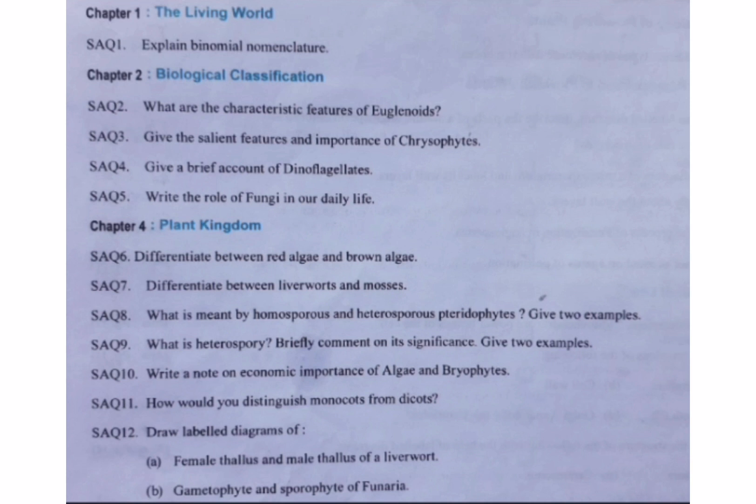In first intermediate botany there are total 13 chapters. From that some chapters were deleted and some concepts also. In the first chapter, there is one and only short answer: explain binomial nomenclature. It is a very easy answer you can prepare it well.